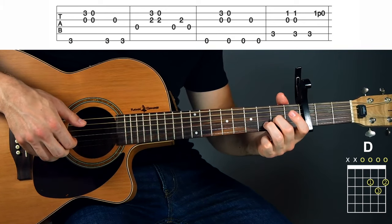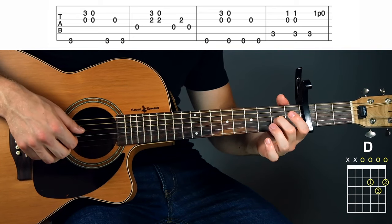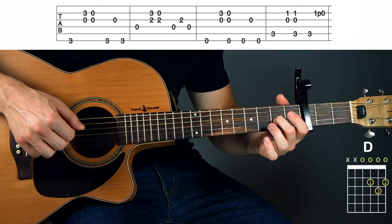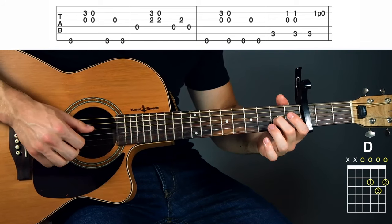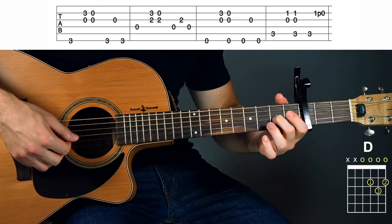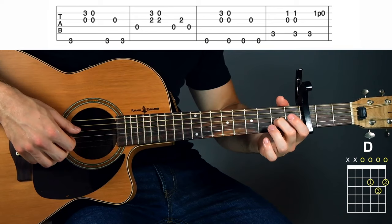And then like last time, take off your 3rd finger and play the 4th, 3rd, and 2nd strings. And then again, like last time, we're going to play the bass note, so the 4th string, and then the 3rd string, and then the 4th string.